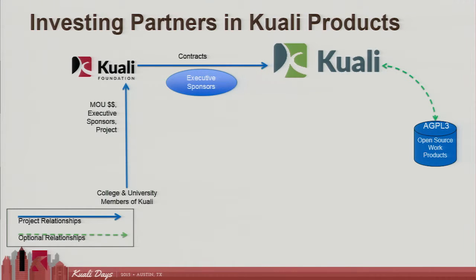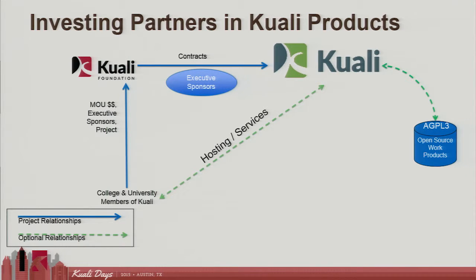The work product that comes out is open source, available to anyone and everyone in the world on an equal basis. It's posted in GitHub and released under an OSI-approved license — we use the AGPL-3, a very strong, powerful open source license that keeps that code open in the future. Institutions may then, if they wish, choose to contract directly with Kuali the company if they want cloud or SaaS services. They may download the code and run it on their own, or they may choose to pay Kuali Co. to run the software as a service on a subscription basis.